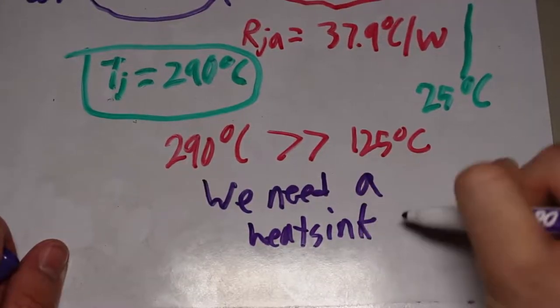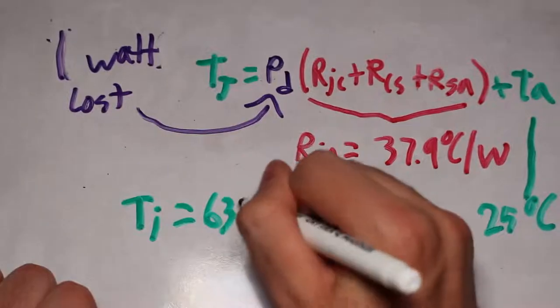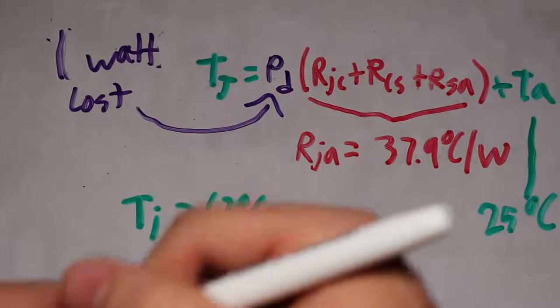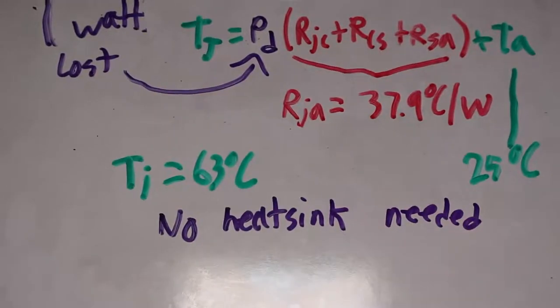If we change the load, however, to only one watt of loss, we could get resulting temperatures of 63 degrees. So if your load is small enough, you can get away without using a heatsink. But let's continue with the first example and select an appropriate heatsink for this load.